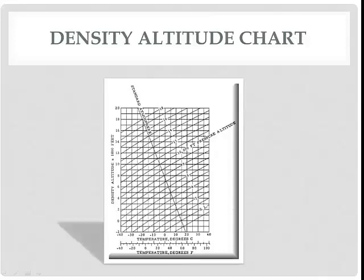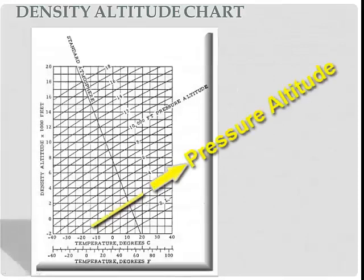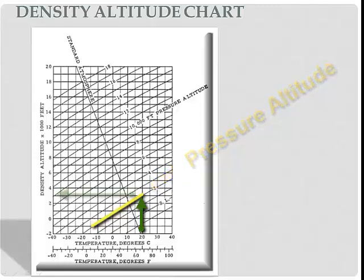For this we're going to use 2,000 feet pressure altitude and 20 degrees Celsius, around 68 Fahrenheit. Let's draw a line up from 20 degrees Celsius. We're going to draw a line up until we meet that 2,000 feet pressure altitude. Then we're going to draw a line off to the left and that's going to show us the density altitude, about 2,500 feet.